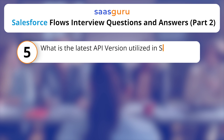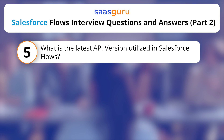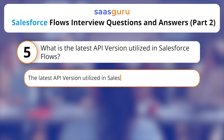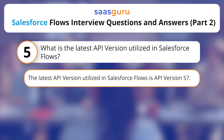What is the latest API version utilized in Salesforce flows? The latest API version utilized in Salesforce flows is API version 57.